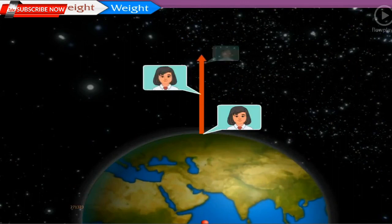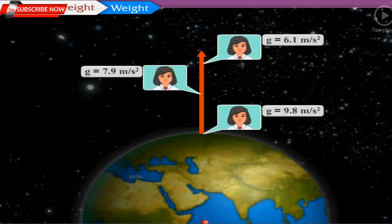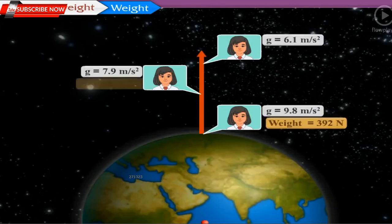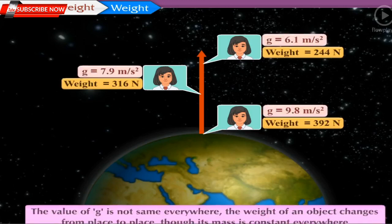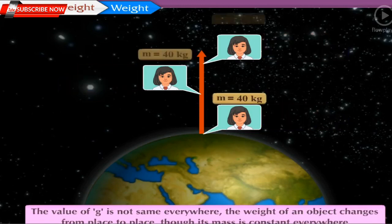As we move above the surface of the Earth, the value of acceleration due to gravity g decreases and so the weight of an object also decreases. As the value of g is not same everywhere, the weight of an object changes from place to place though its mass is constant everywhere.